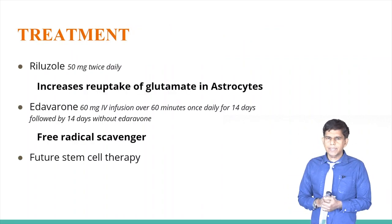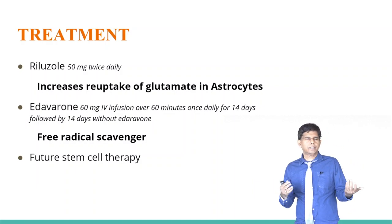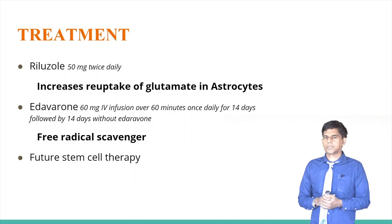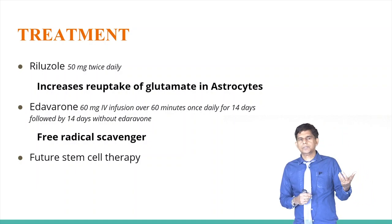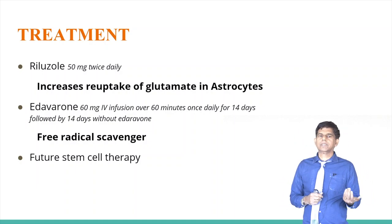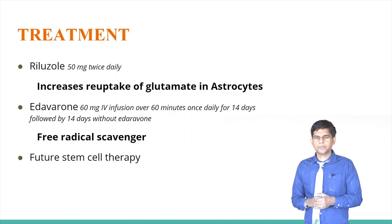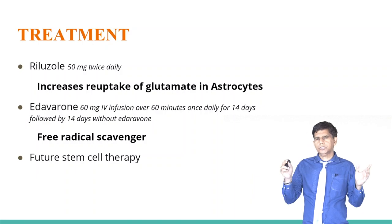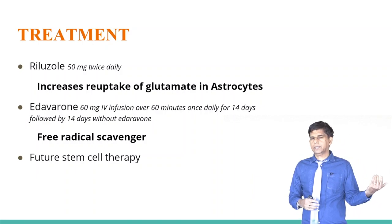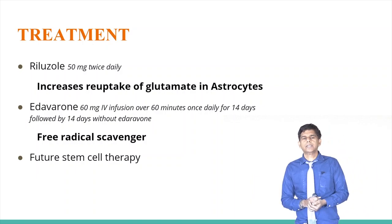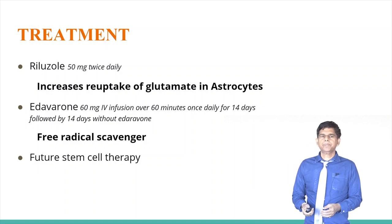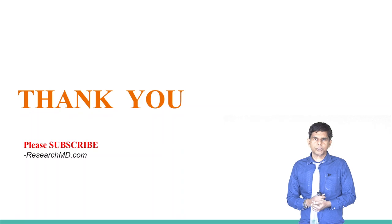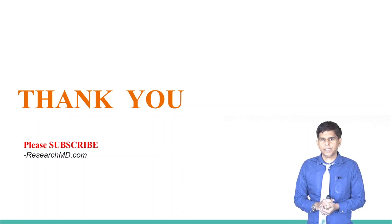Treatment options are limited. Riluzole 50 mg twice daily works by increasing reuptake of glutamate in astrocytes. A newer drug, Edaravone 60 mg IV given over 60 minutes for 14 days, acts as a free radical scavenger. Future therapies are under investigation, including stem cell therapy. Thank you for watching — please subscribe to our channel.